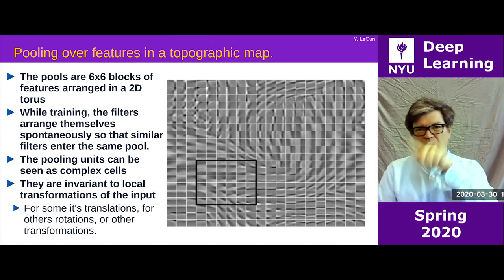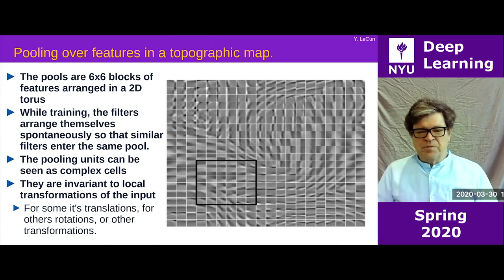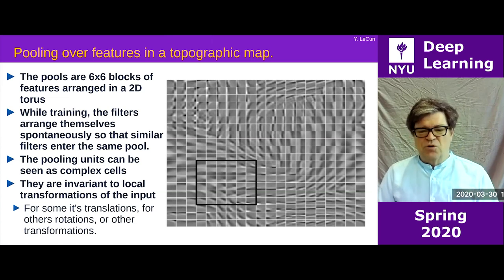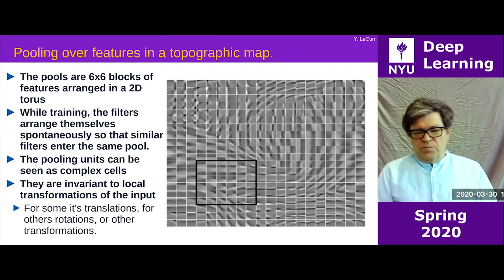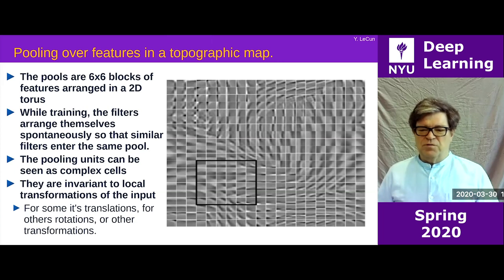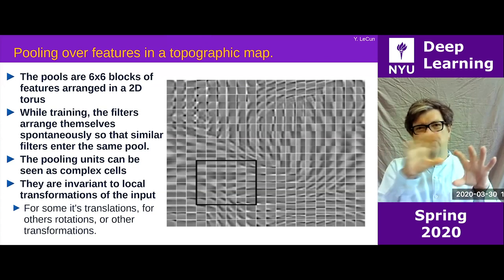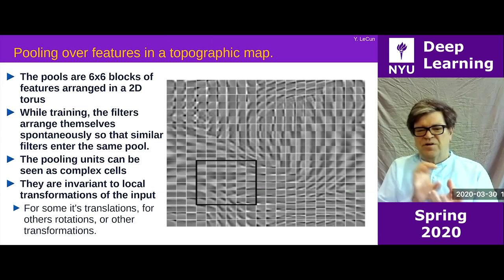You could think of this as pooling over features rather than over space, since there's no spatial structure here — it's a fully connected network. The sum of the L2 norms of features within each group is the regularizer used when training the sparse autoencoder. The system wants to minimize the number of groups that are on at any one time, so it regroups similar features that are likely to fire simultaneously. Because the groups overlap, this creates those slowly evolving sets of features that seem to swirl around a point.